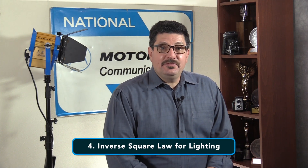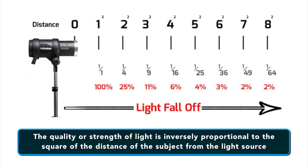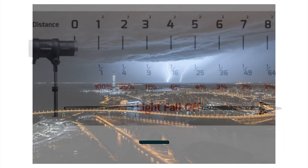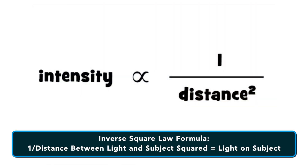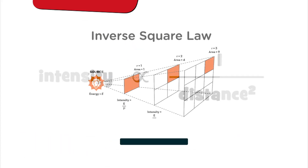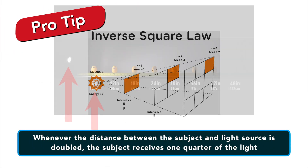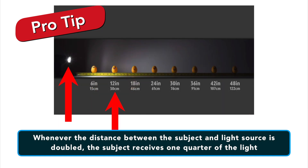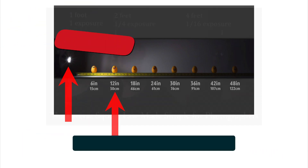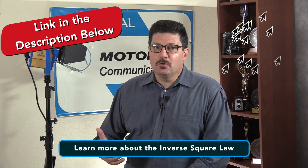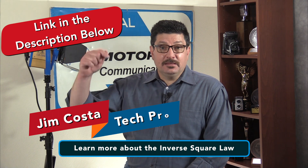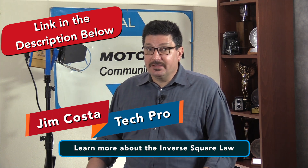Number four: the inverse square law for lighting. The definition is that the quality or strength of light is inversely proportional to the square of the distance of the subject from the light source. The formula is: 1 over the distance between the light and the subject squared equals the amount of light on the subject. In simple terms, whenever the distance between the subject and the light source is doubled, the subject receives one-quarter of the light. The intensity of a light source decreases exponentially as you move it further away from your subject. I've done a more detailed video on the inverse square law linked in the description.